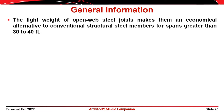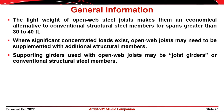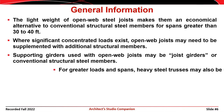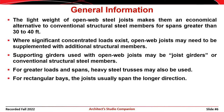The lightweight of steel joists makes them an economical alternative to conventional rolled steel members when you have span lengths greater than around 30 to 40 feet. Where significant concentrated loads exist, however, joists may need to be supplemented with additional structural members. Supporting girders used with open web joists may consist of other joists called joist girders, or you can use conventional structural steel members like rolled W-shapes. For greater loads and spans, heavy steel trusses may also be used.